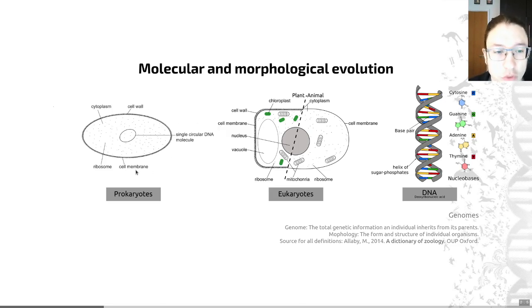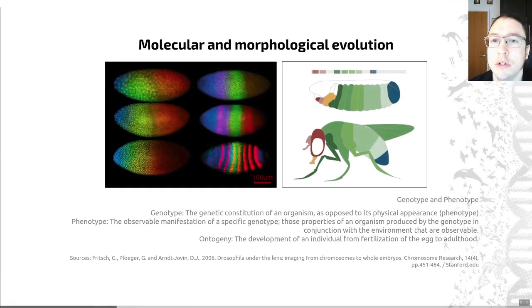So while selection occurs on organisms, it ultimately causes changes to the genome across generations. So we have this genome or genotype, and that creates the phenotype. The phenotype is the observable manifestation of a specific genotype. So it's basically the external appearance and may include in some definitions, the behavior of an organism. You can see a couple of definitions on this slide if you want to look at those in a tiny bit more detail.